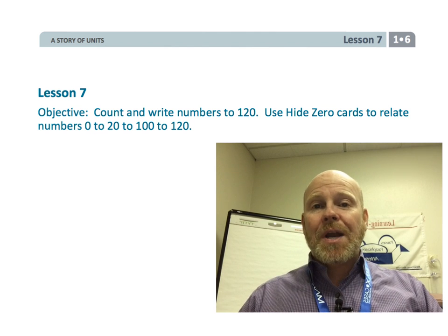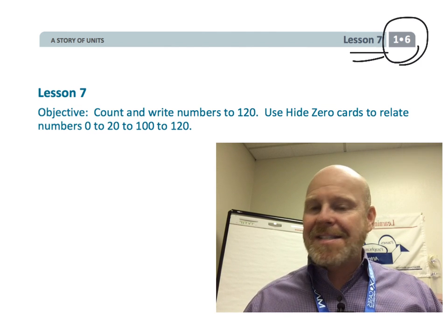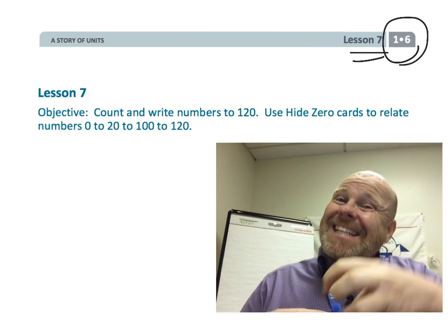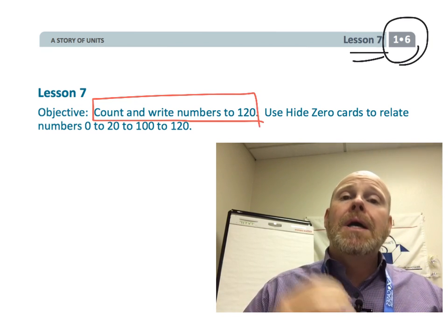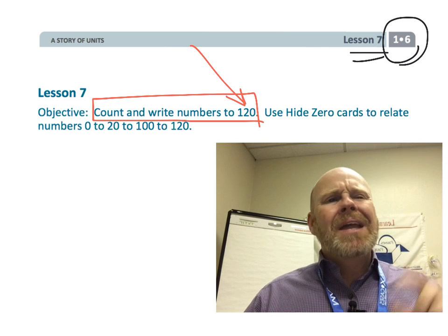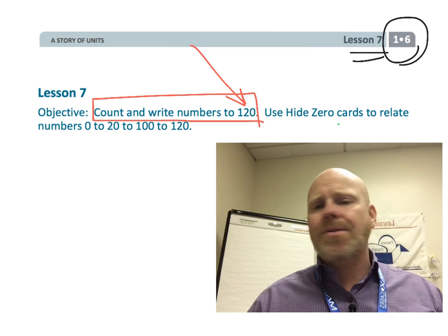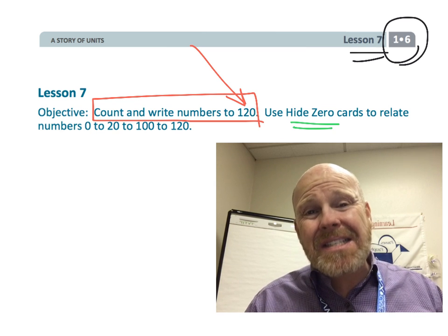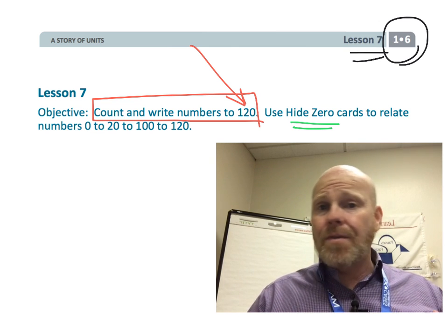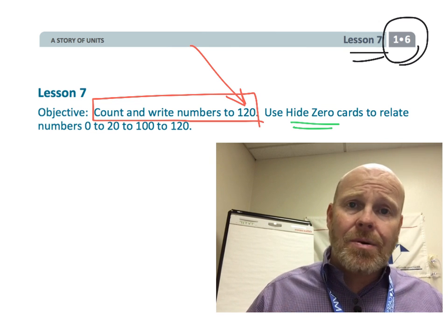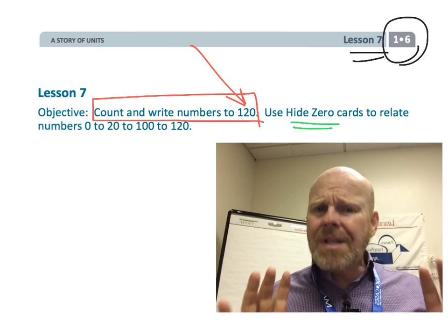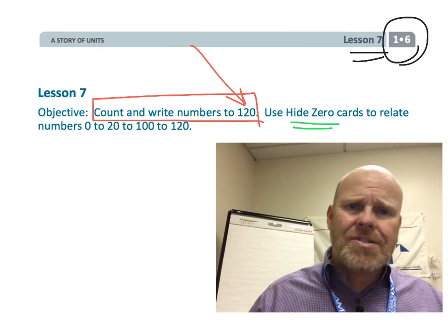All right, this is first grade, module 6, lesson 7. In this lesson, students are going to continue their counting and extend their counting up to 120. The directions do say to use hide zero cards. That's not really necessary, although if you want, you can use them. So don't go freaking out if you don't have hide zero cards. Those were found in lesson 3. You don't necessarily need them. Let's just get started.